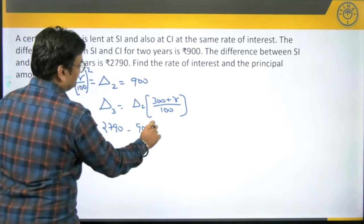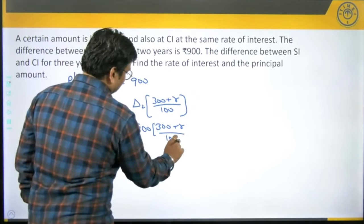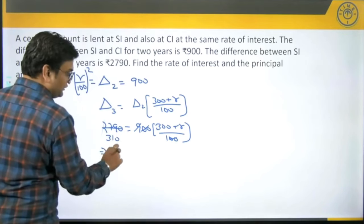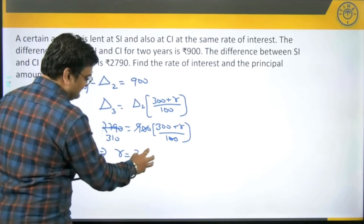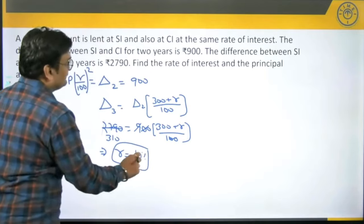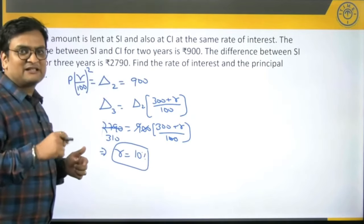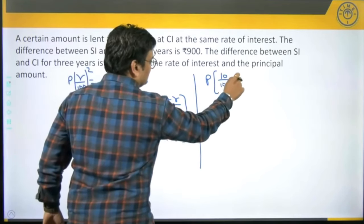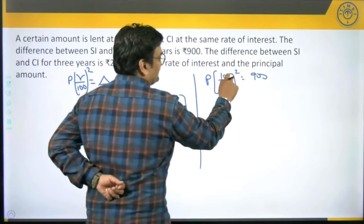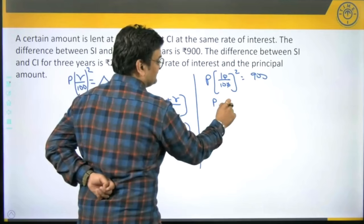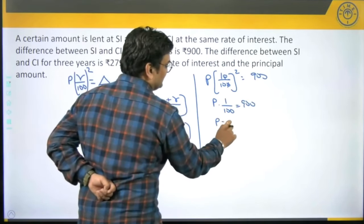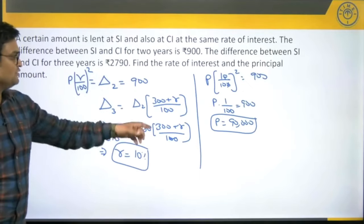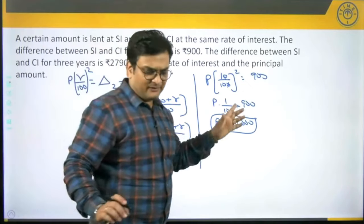Using the formula: Δ3 = Δ2·(300+R)/100. So 2790 = 900·(300+R)/100. Simplifying: 2790/9 = 300+R, giving 310 = 300+R, so R = 10 percent. For the principal, P·(10/100)² = 900, so P·(1/100) = 900, giving P = 90,000. Rate of interest is 10 percent and principal amount is 90,000.